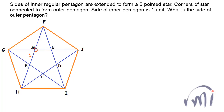Each internal angle of the pentagon is 108 degrees, so all these angles are 108 degrees. The angles marked in orange color are 108 degrees. And if those angles are 108 degrees, that means this remaining angle — this angle and this angle — will be equal to 72 degrees, because they make a linear pair with the internal angle of the pentagon.